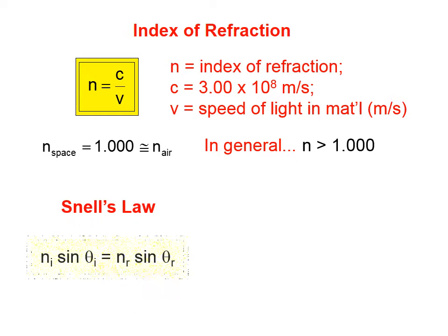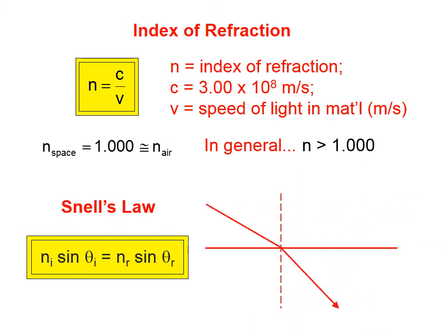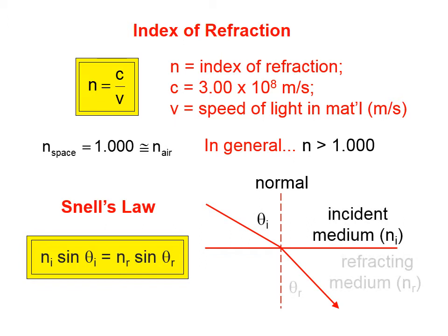Snell's Law relates the index of refraction of the incident medium and the index of refraction of the refracting medium with the incident and refracted angles. This imaginary line, called the normal, is the reference point that we use when measuring the value of the incident angle and the refractive angle. We measure all angles relative to this imaginary line called the normal, not relative to the surface.